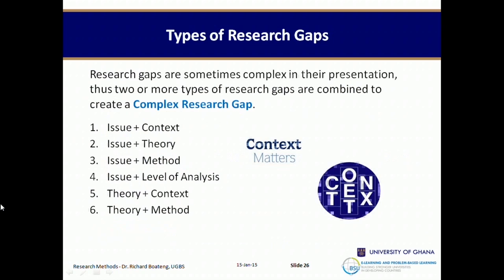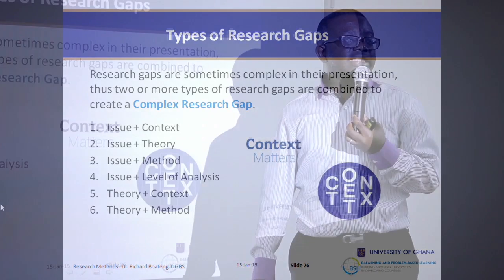In research we encourage you to combine gap types to create a more complex and valuable gap. You can combine issue and context, issue and theory, issue and method, or issue and level of analysis. For a business program like an MBA or undergraduate level, combining issue and context or issue and level of analysis is encouraged. For a PhD student, you may want to go beyond issue and context to combine issue and theory, or even theory and method, because combining gap types increases the value of contribution and the originality you bring to the research.